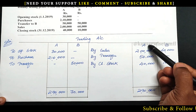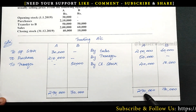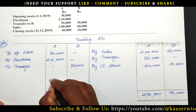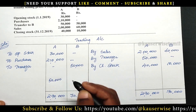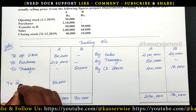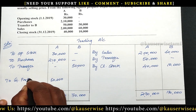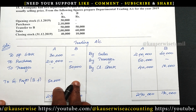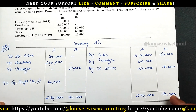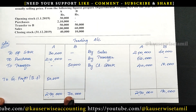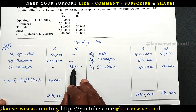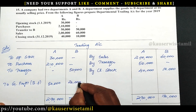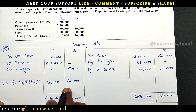The balancing figure gives us the gross profit. Department A total is 2,90,000 but we have 2,40,000 on the credit side, so the balance — that is Department A's gross profit — is 50,000. For Department B, the total is 70,000, and we have 50,000 on the credit side, so the balance — Department B's gross profit — is 20,000.